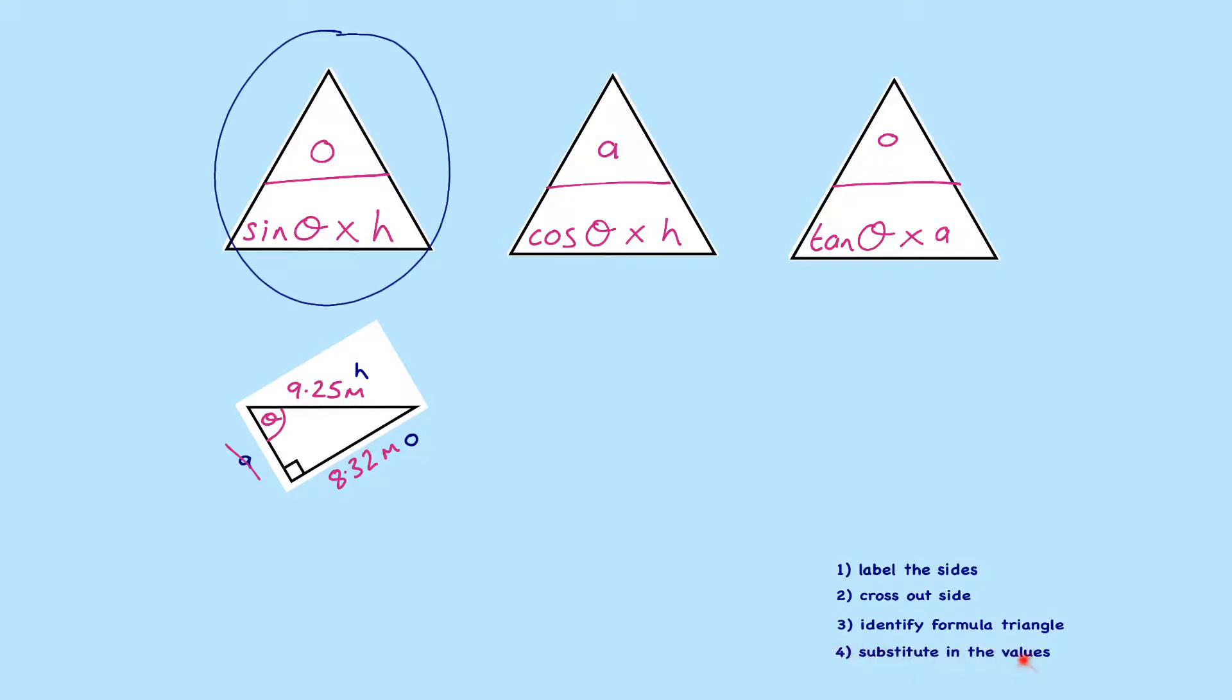And then I'm going to substitute in the values. So remember in this question, we want to find the missing angle, so we're trying to find sin theta first. So sin theta is equal to 8.3, which is my opposite side, divided by H, which is 9.25.